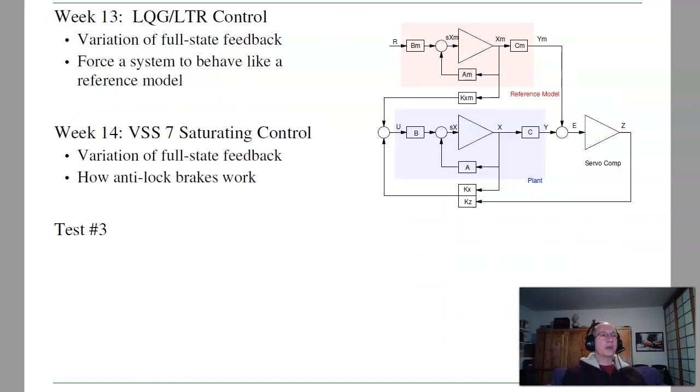After that, we'll look at a few variations, such as LQG, LTR control. That's how I define a reference model of the plant's supposed to behave. Can I use full state feedback to force the plant to track the reference model? And there's also a thing called variable structures, VSS control. Which is how anti-lock brakes work in cars. I can choose the feedback gains to specify how the system should behave, and use a relay to chatter going on and off. That's followed by test number three.